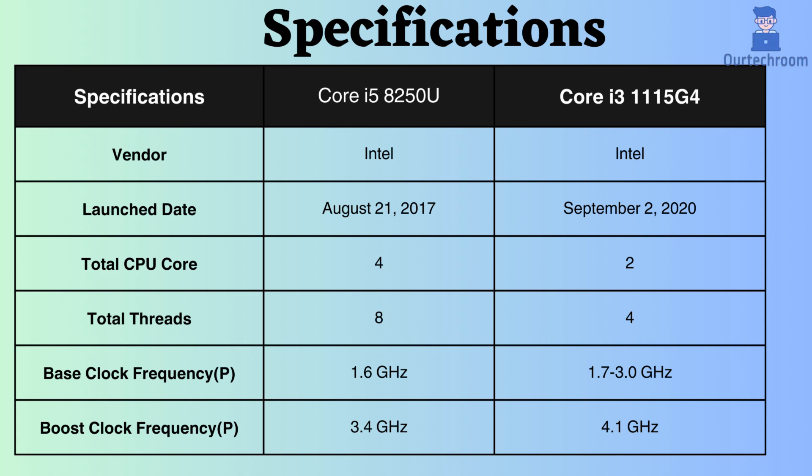The Core i3-1115G4 was released approximately three years after the Core i5-8250U. Therefore, the Core i3 may incorporate a slightly improved processor architecture and technology. While the Core i5 features four cores and eight threads, the Core i3 has two cores and four threads.